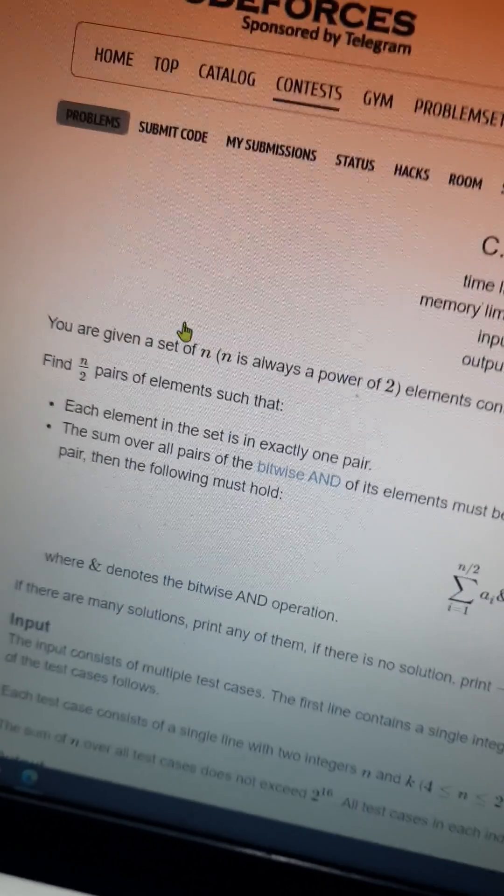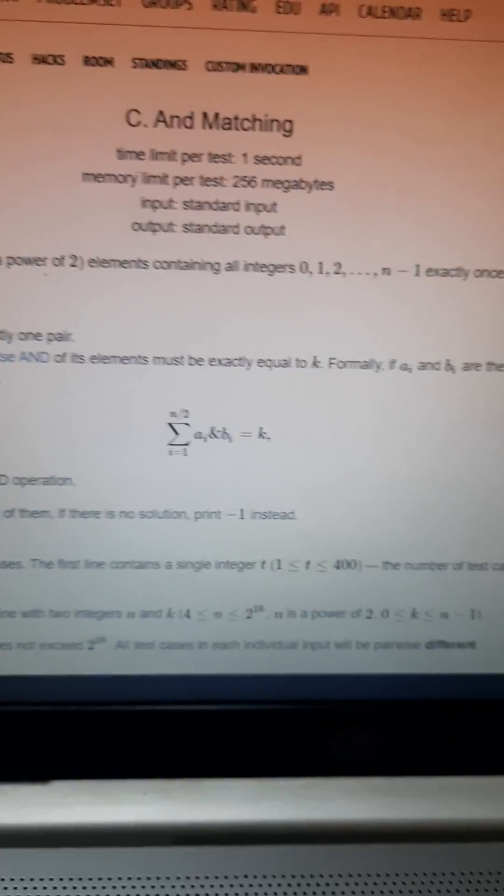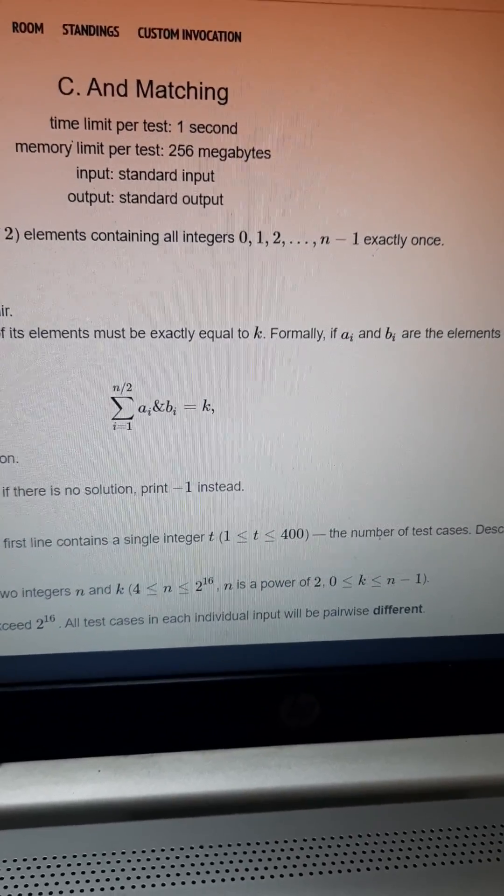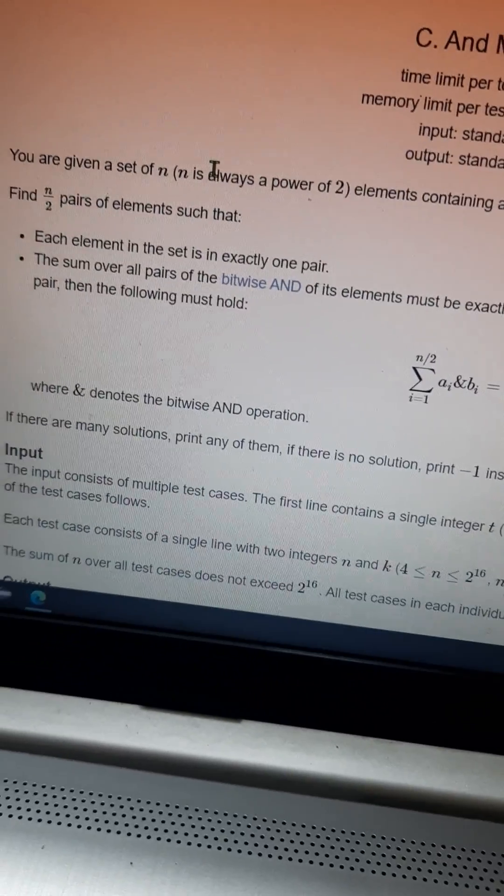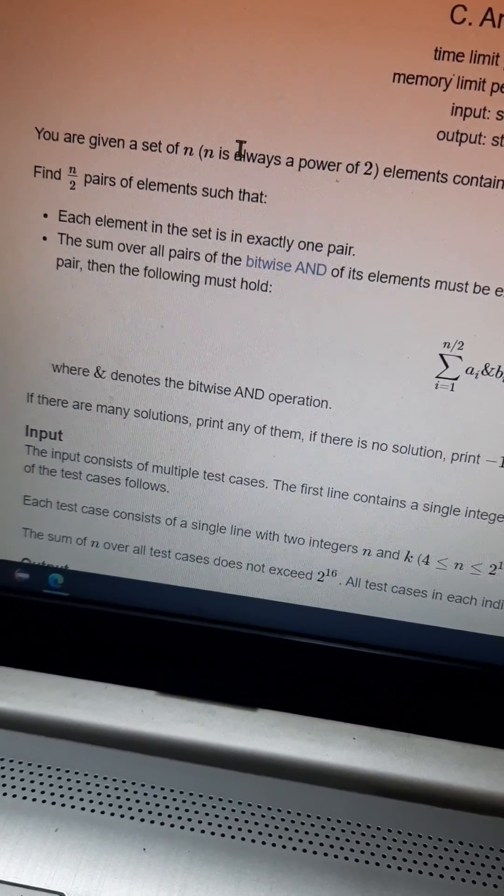Okay, and matching. You are given a set of n (n is always a power of 2) elements containing all integers 0 to n-1 exactly once. Find n/2 pairs of elements such that each element is in the set in exactly one pair.